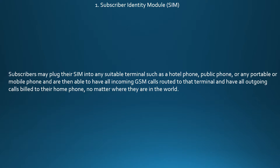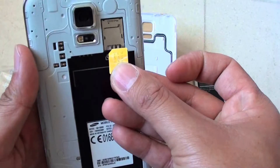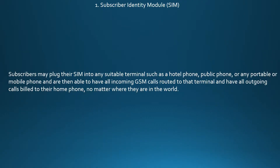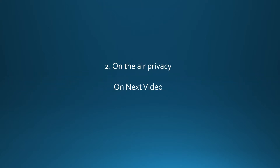Subscribers may plug their SIM into any suitable terminal such as a hotel phone, public phone, or any portable or mobile phone, and are able to have all incoming GSM calls routed to that terminal and all outgoing calls billed to their home phone, no matter where they are in the world.